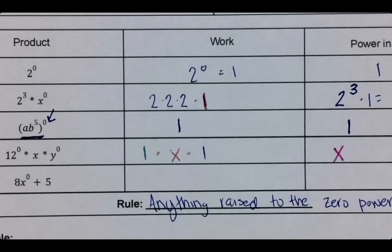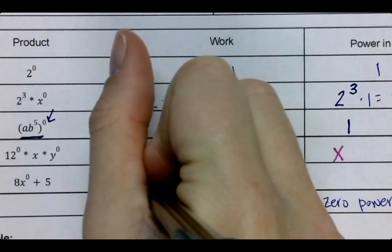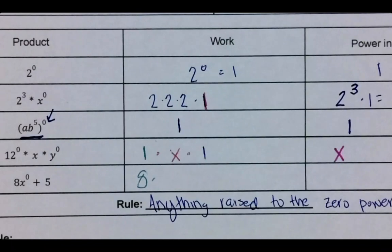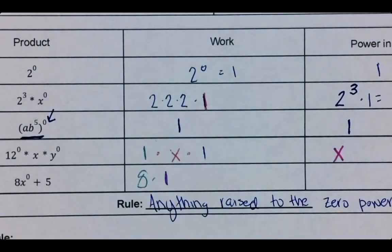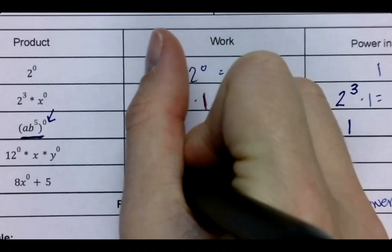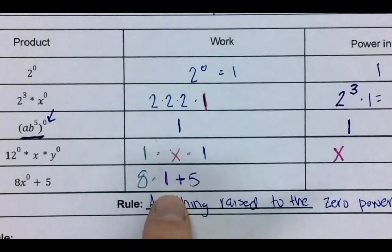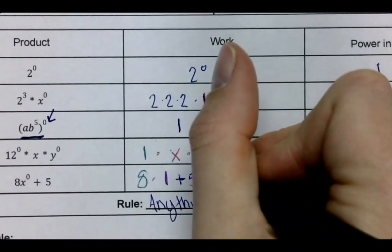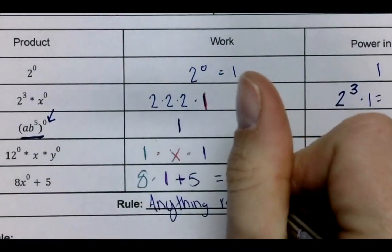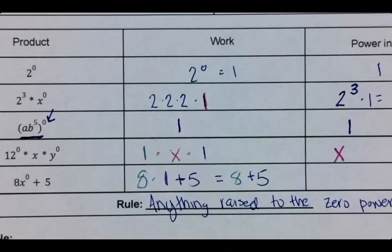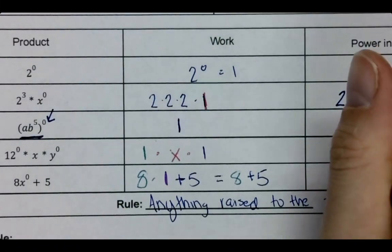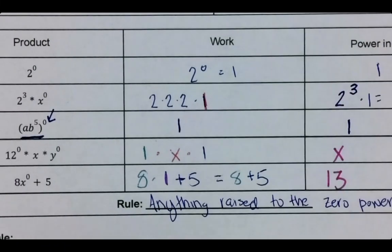For the next one, we have 8x to the zero power. Okay? So that's eight. And then x to the zero power is just one. And then we're just going to have plus five. Well, order of operations says 8 times one, which is eight. Plus five. So that would equal 13. And that's it.